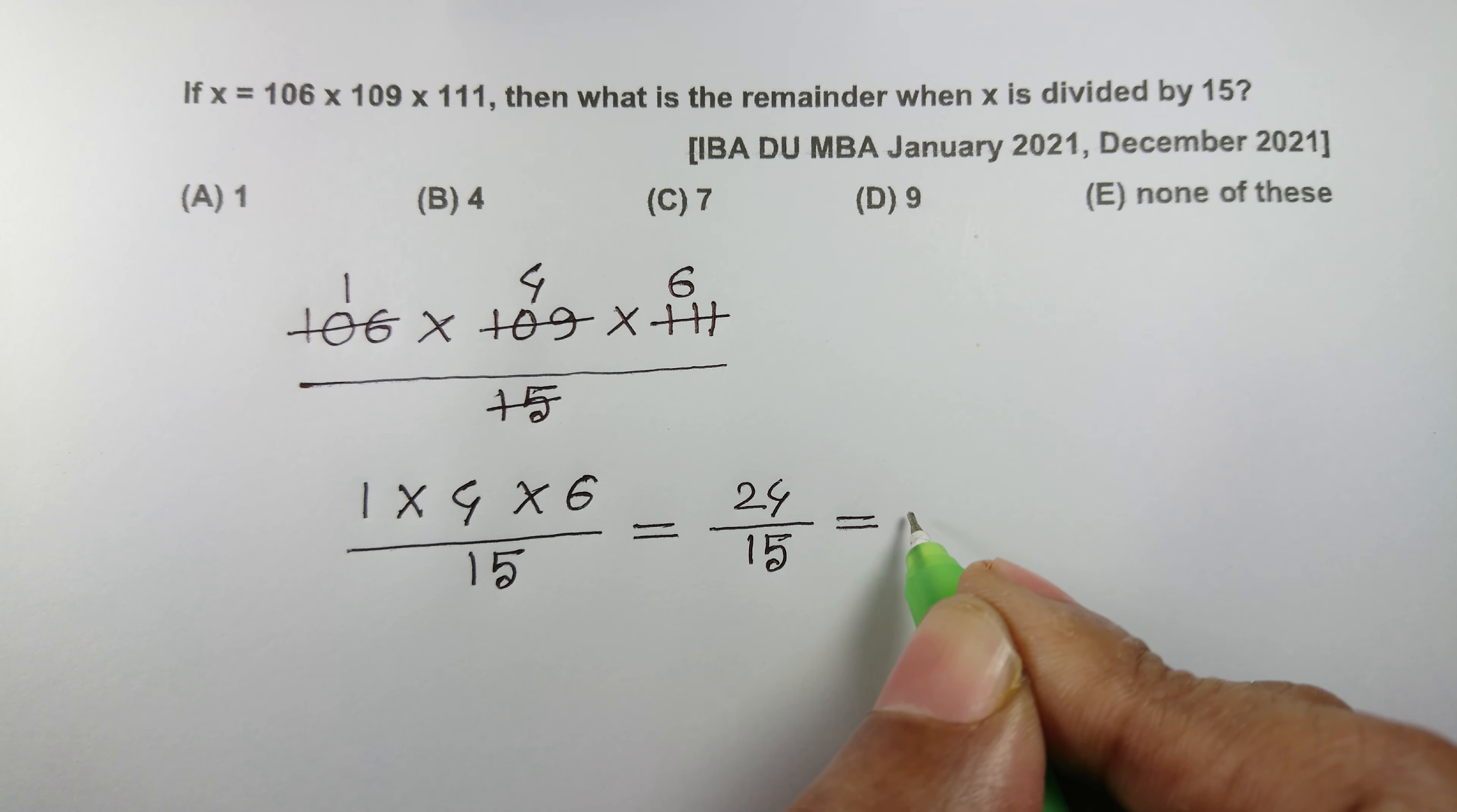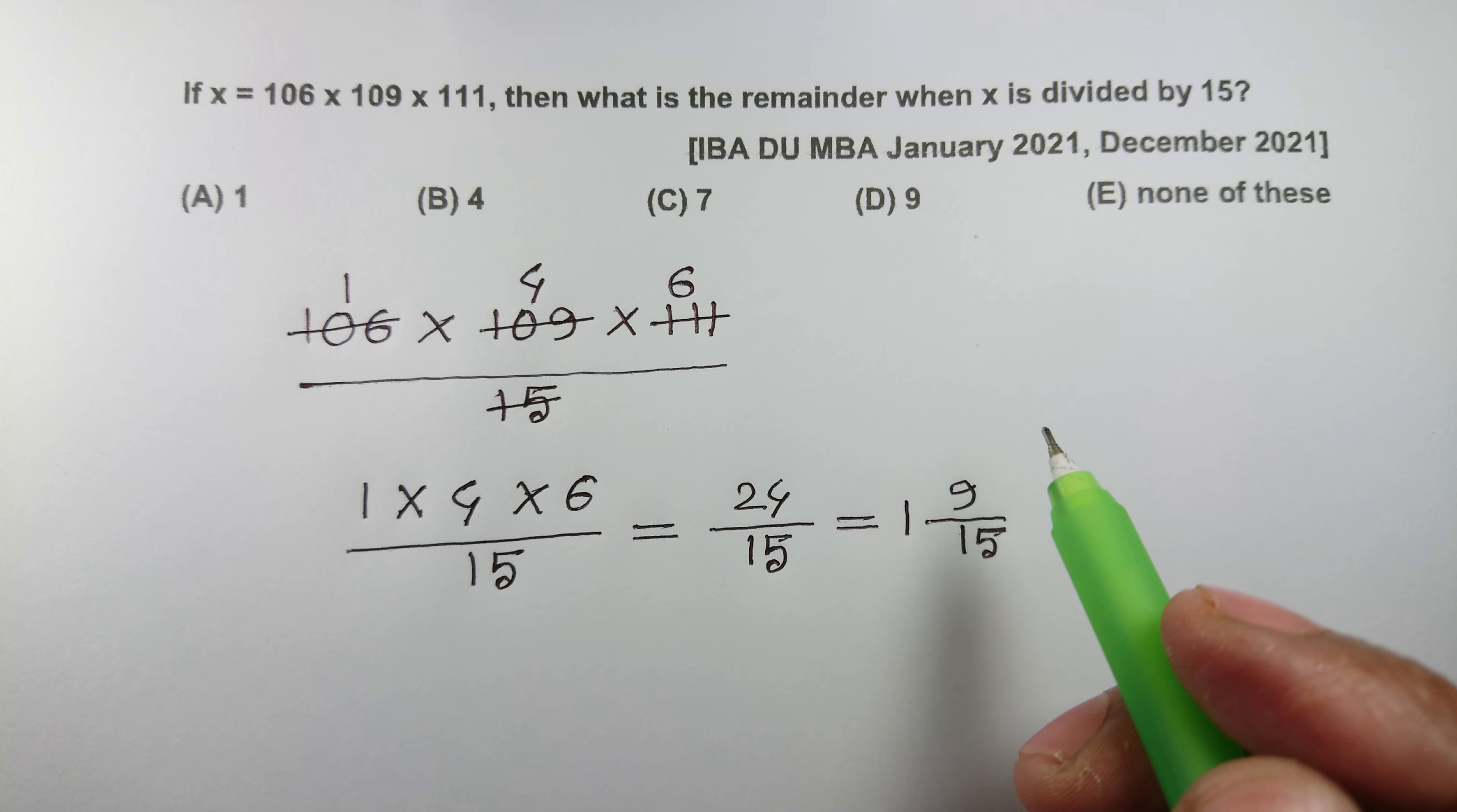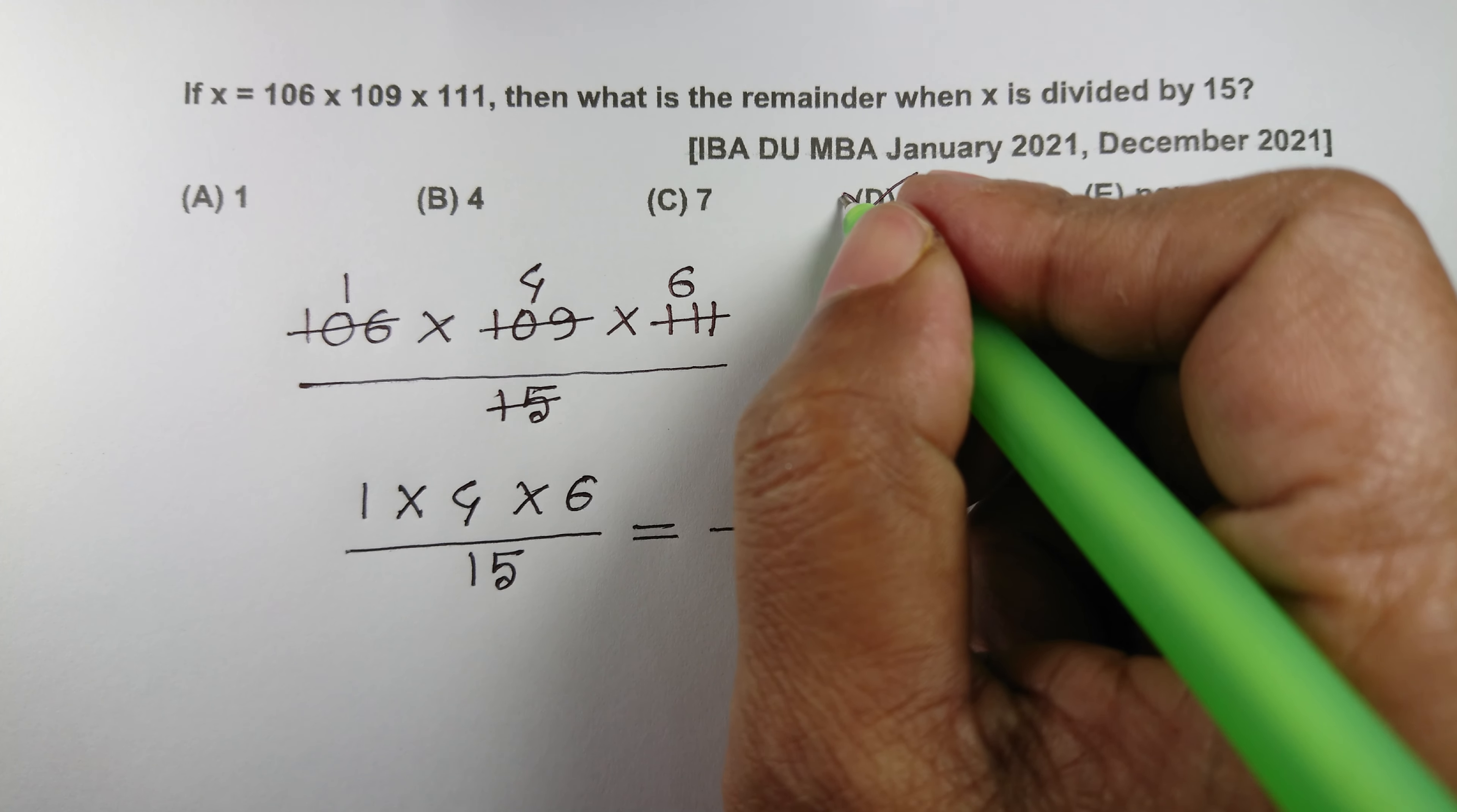24 ને 15 થી ડિવાઇડ કરવા કરવા કરીએ તો કોશન્ટ ભાગફળ આવશે 1 એ રિમાઇન્ડર થશે 9. એટલે આવા માર આન્સર 9, તારે દી કે 16 માં આ આન્સર હોય 9 એ જ છે.